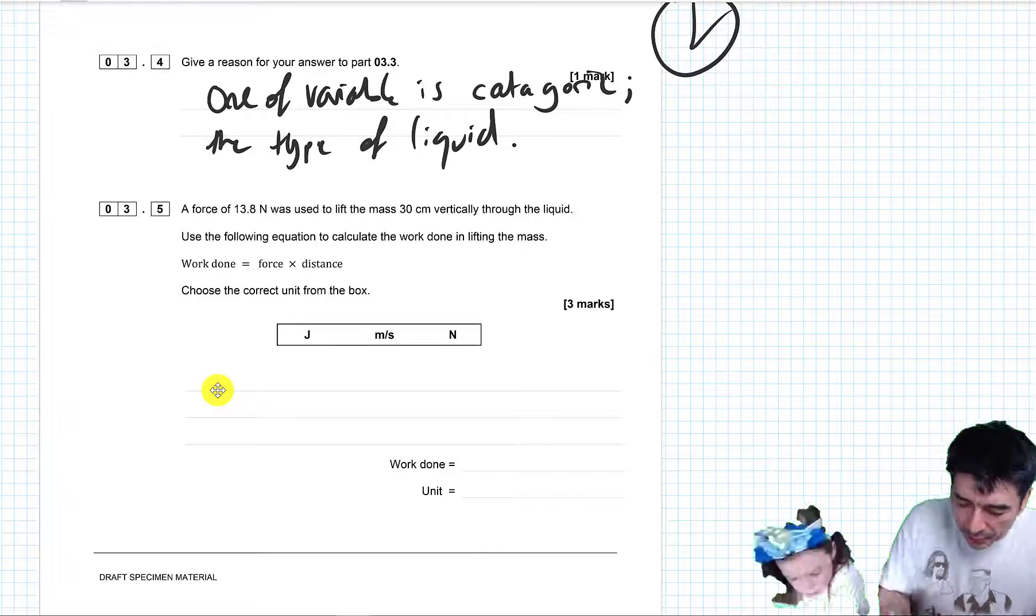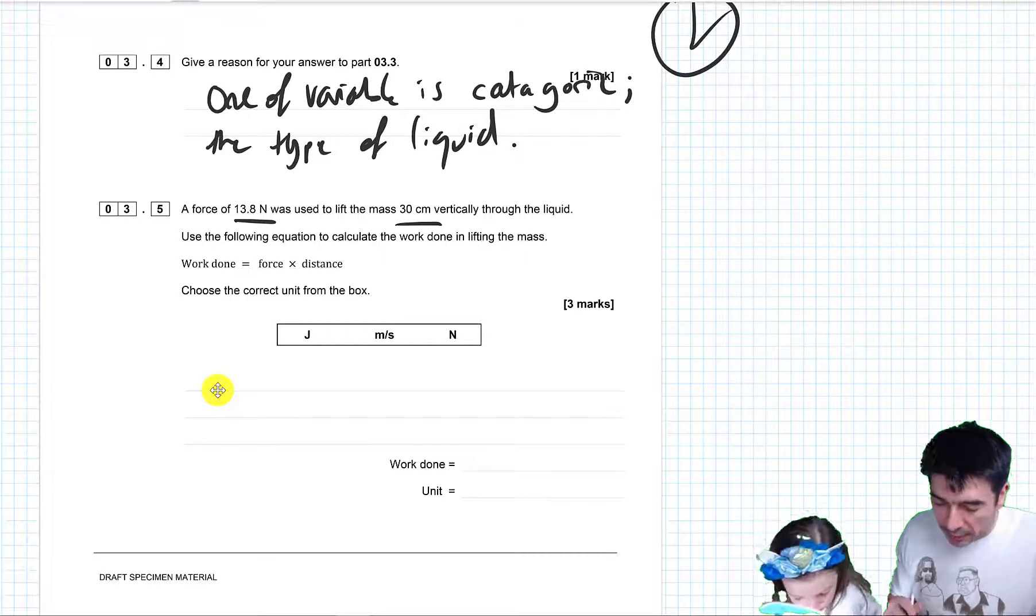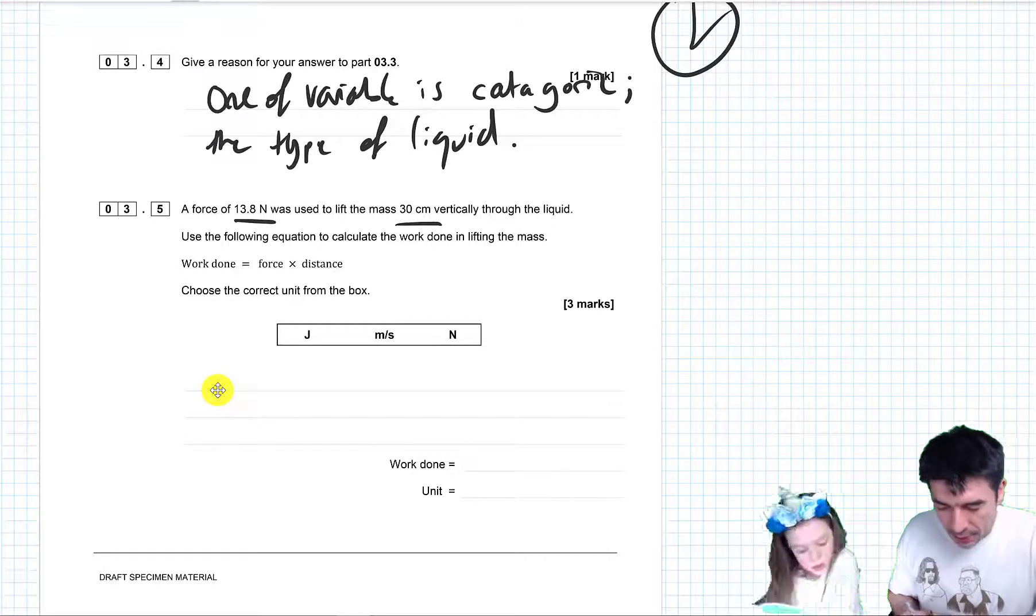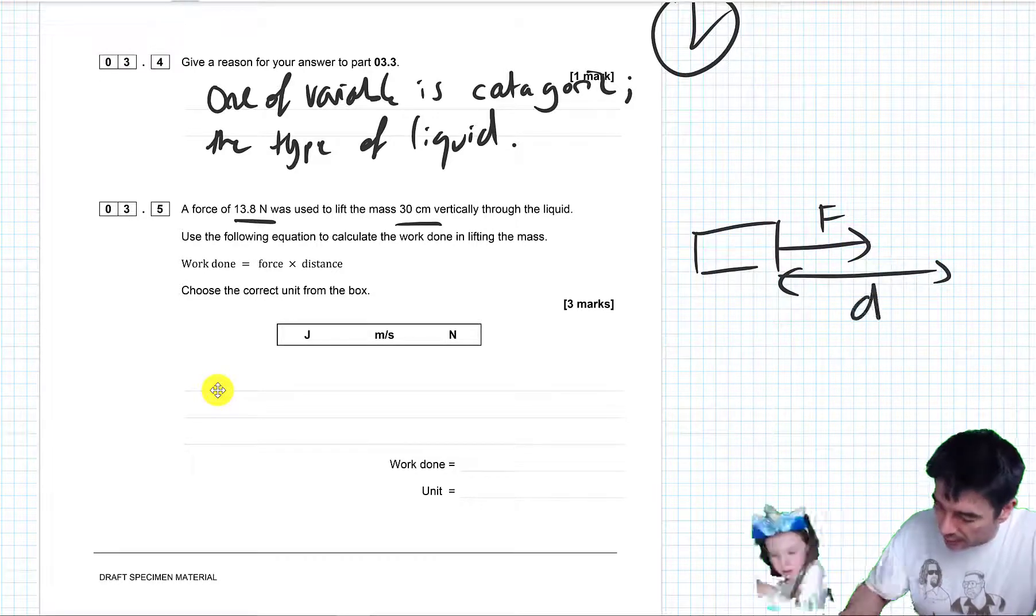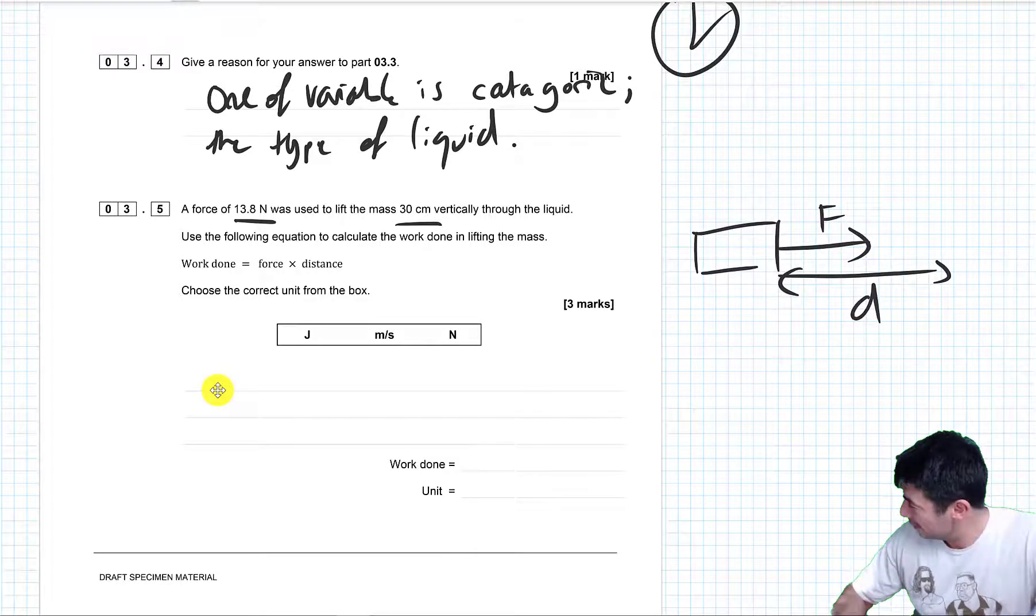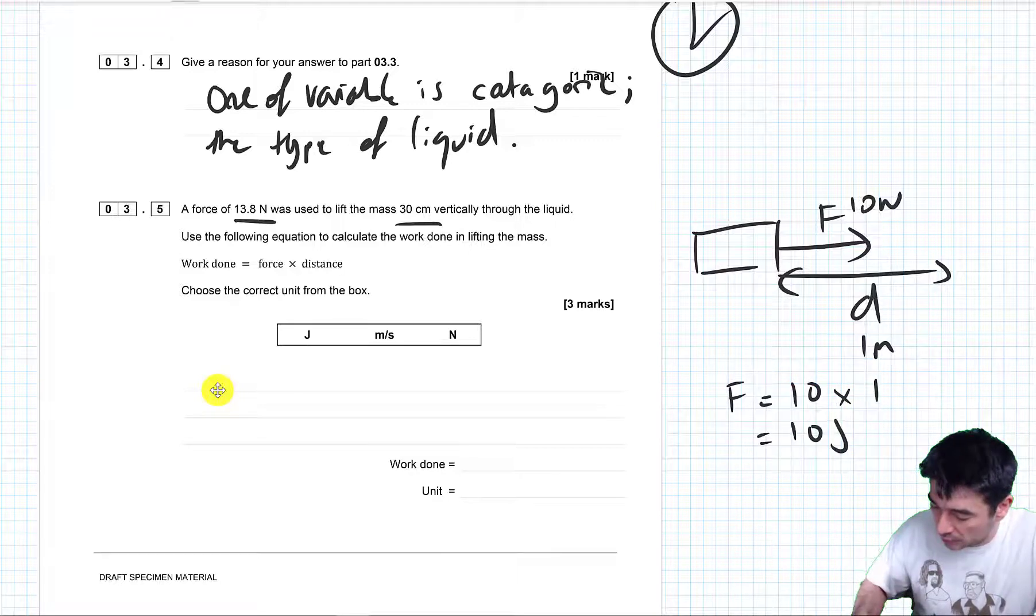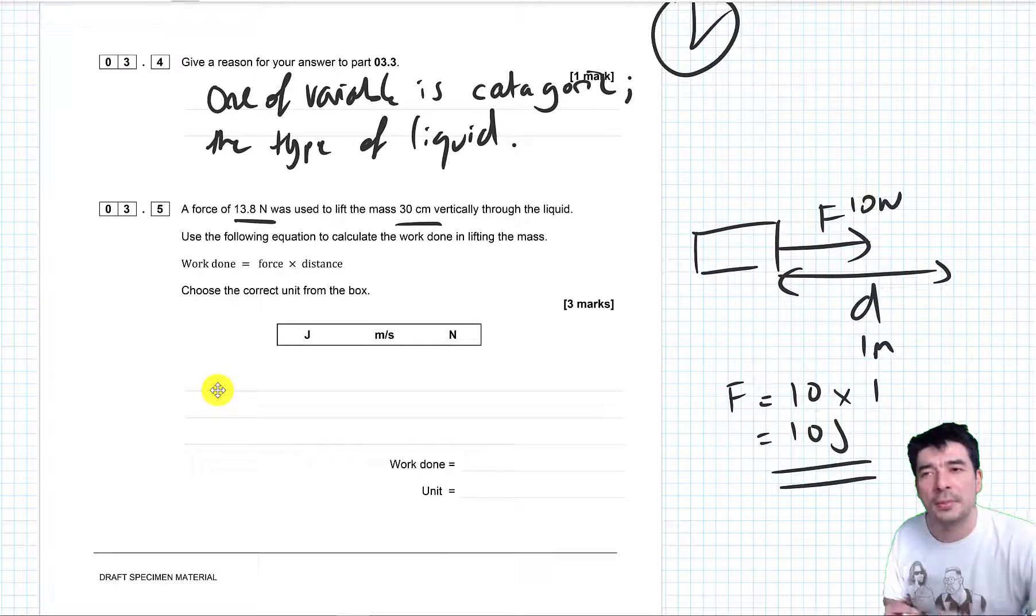Question 3.5. A force of 13.8 Newtons is used to lift the mass 30 centimeters vertically through the liquid. Use the following equation to calculate the work done in lifting the mass. Work done equals force times distance. Choose the correct unit from the box. Yeah, work is only done when you use a force to push an object through a given distance. So if you apply a force of say 10 Newtons to an object and you move it through a distance of 1 meter, you will be doing force equals 10 Newtons times 1 meter equals 10 joules of work. That's how it's calculated. And you can kind of think of being paid joules of money, because work you get paid for. And it's a good analogy as well, because the people who first came up with the idea of energy and work were worried about not wasting money in steam engines by buying too much fuel.